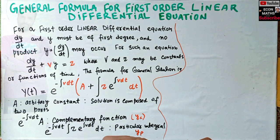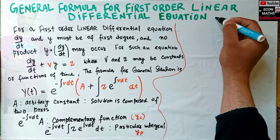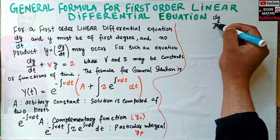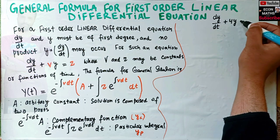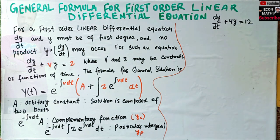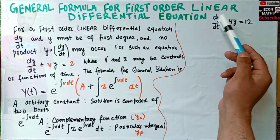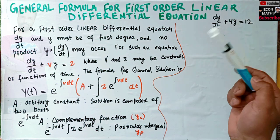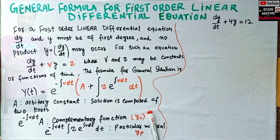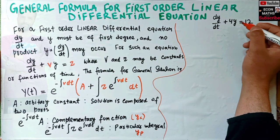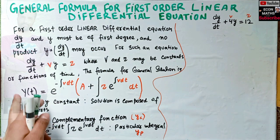Let us give an example. Consider the differential equation dy/dt plus 4y equals 12. This is a first order linear differential equation — the derivative is of first order and first degree, y is of first degree, and there is no multiplication between y and dy/dt. Here 4 is our v and 12 is our z.